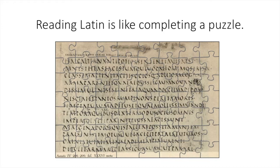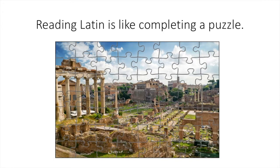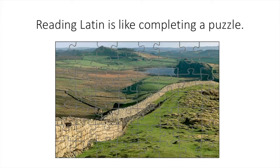We can push this comparison even further. In order to translate a sentence, you need to understand both the meanings of the words and the word endings. You need to know your vocabulary, noun adjective endings, and your verb endings. The image on the puzzle is like your vocabulary. It doesn't matter if the image on the puzzle is a manuscript of Virgil's Aeneid, the Roman forum, or Hadrian's Wall that separated the Roman province of Britannia from the land of the barbarians. The image guides you, but you cannot force the puzzle together purely based on the image.